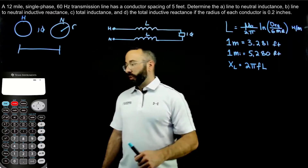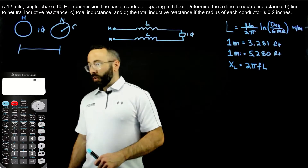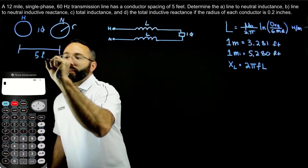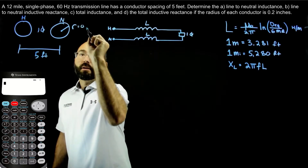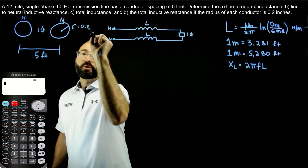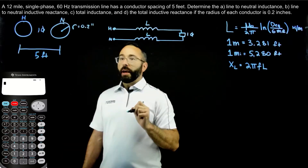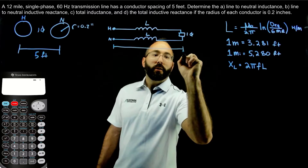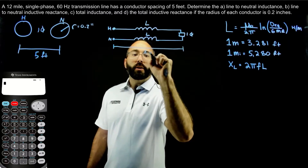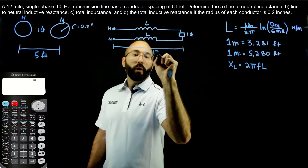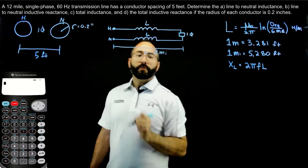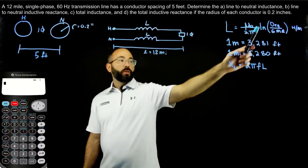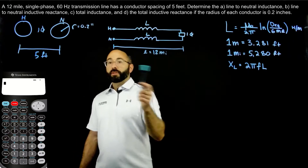Over here on the left, let's fill in the values from the problem. We have a conductor spacing of 5 feet, a radius of 0.2 inches, and our total length is L equals 12 miles. If we're going to solve for the inductance, we're going to need to know the DEQ and the GMR of this transmission line.